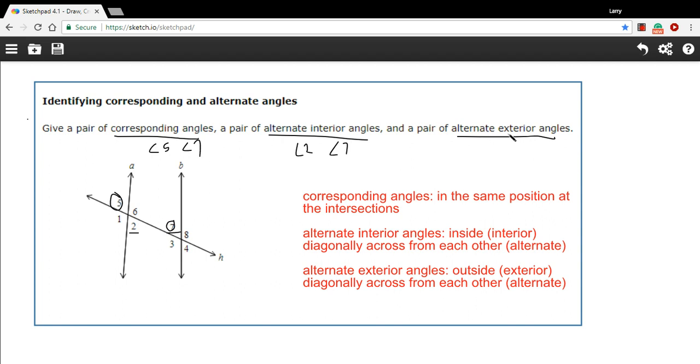All right, and the last thing we want to find is alternate exterior angles. So here we're looking at the angles on the outside of the figure. So 8 and 4 and 5 and 1. And again, alternate means diagonally across from each other.